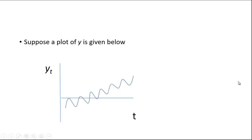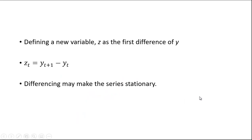Suppose you plot Y and get something like this — a data series over time that is clearly not stationary. The variance looks pretty constant, but the mean is not constant; it's trending upwards. So you can't apply standard ARMA models to this data. What we can do is try differencing the data. We define a new variable Z as the first difference of Y.